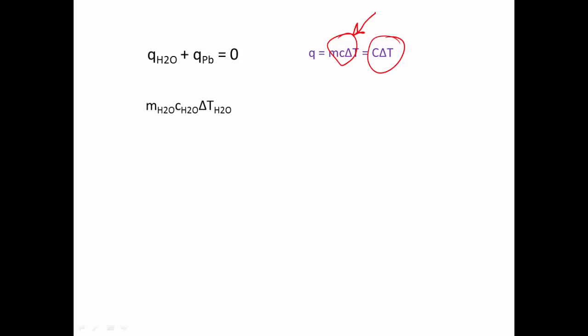So when we substitute in, we substitute in for the water. So our mcΔT of water, make sure to signify that each of those are for water. Plus that of our lead, so our mcΔT of our lead, all add up to zero.